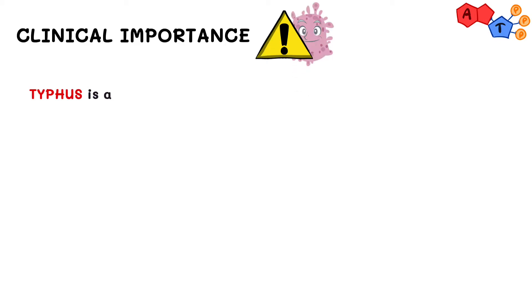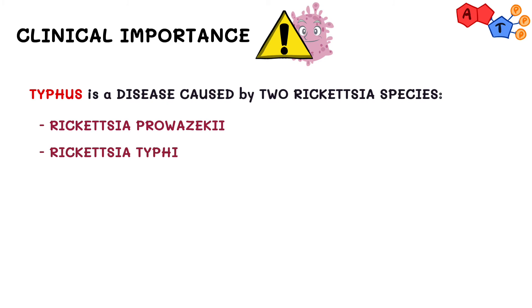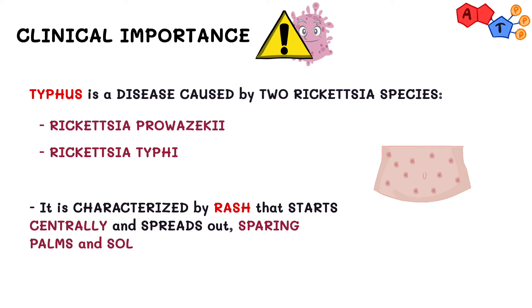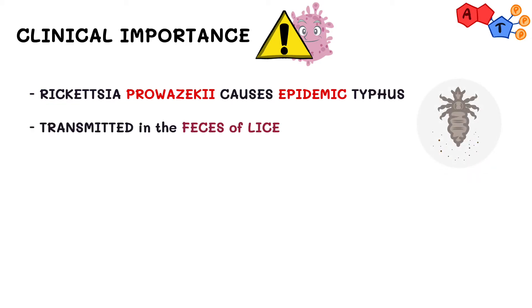Now regarding typhus, it's a disease caused by two rickettsia species: Rickettsia prowazekii and Rickettsia typhi, and is characterized by a rash that starts centrally and spreads out, sparing the palms and soles. Rickettsia prowazekii is the etiologic agent of epidemic typhus, transmitted in the feces of lice. If the host has rickettsia circulating in the blood and the lice attach to the human host several times daily to take a blood meal, then they will become infected with Rickettsia prowazekii.